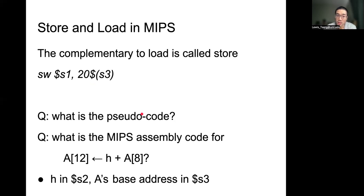Once you understand the concept of stored word, now consider this pseudocode: I want to have the sum of h, which is a variable that's stored inside S2, and the data inside array A, which is where the base address is stored inside S3, and it's the eighth byte. Then I want to put the sum into A[12]. You should think about how to use MIPS instructions, MIPS assembly language, to represent this pseudocode.